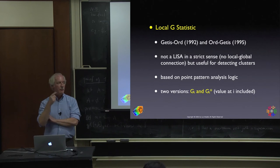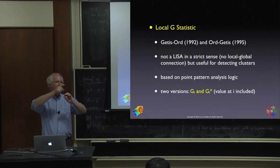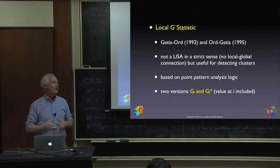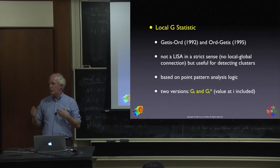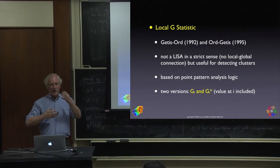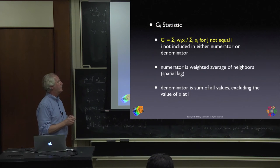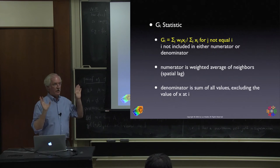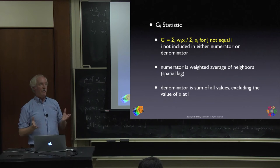The G-statistic originated from point-pattern analysis: given a point, how many points can you expect under spatial randomness in a given circle? That follows a Poisson distribution. Applied to areal data, it's a ratio — weighted sums without cross-products. In its original form the weights matrix was binary, simply summing neighbor values, then scaling by the total sum of values.